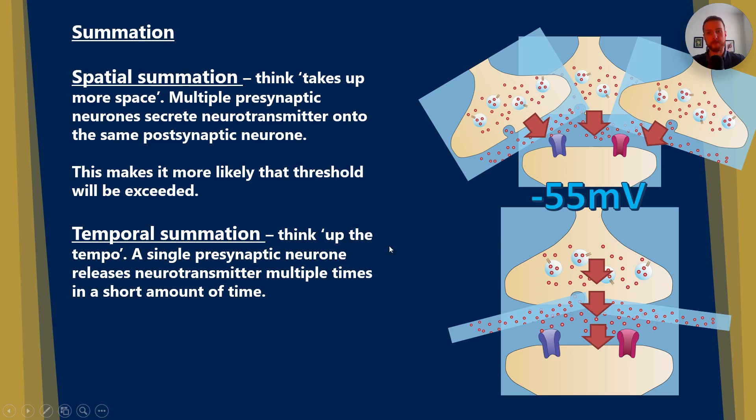Temporal summation. Think up the tempo. This is where neurotransmitter is released more frequently so that enough neurotransmitter can bind to enough receptors, opening enough sodium ion channels, that threshold can be achieved in the post-synaptic neuron.